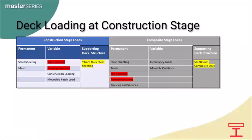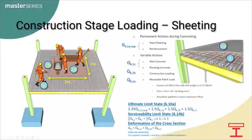Looking at deck loading at the different stages — construction stage conditions can create problems if we're not careful. In my experience I've been tasked to provide remedial works on projects where this stage was not properly planned or executed, and I think they could have been easily avoided. What jumps out from the table is that in the construction phase the concrete is wet, i.e. non-structural — so it's only a load, a live load at that. We're relying on just 1mm steel sheeting for our temporary support. The permanent loads are the steel sheeting and reinforcement, and our live loads are the wet concrete, ponding concrete, general construction loads, and a movable patch load — which is the greater of 10% of the slab self-weight or 0.75 kN/m² over a 3×3 metre working area.